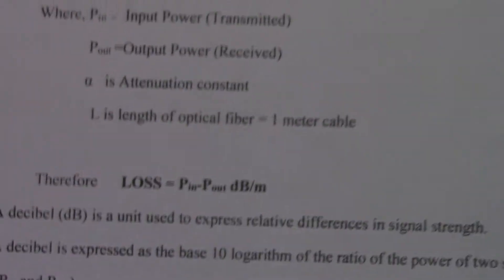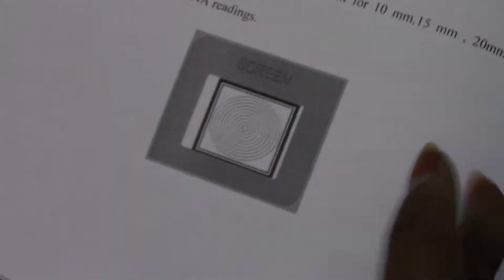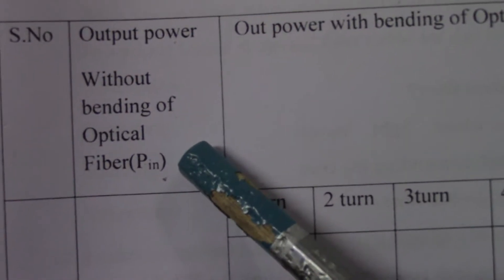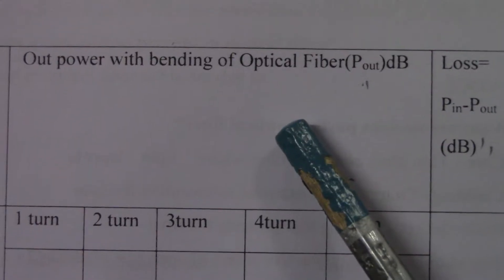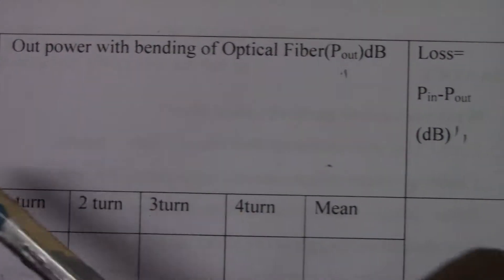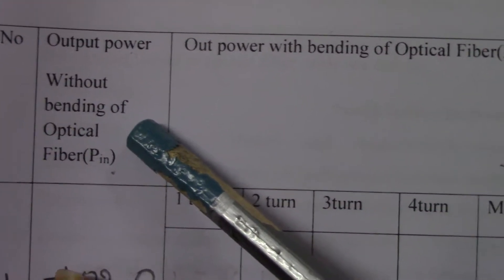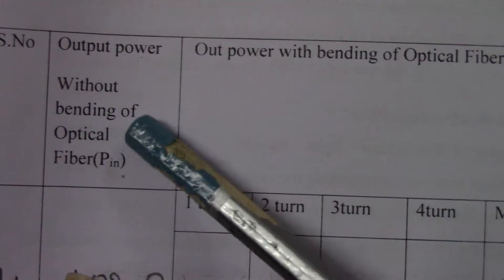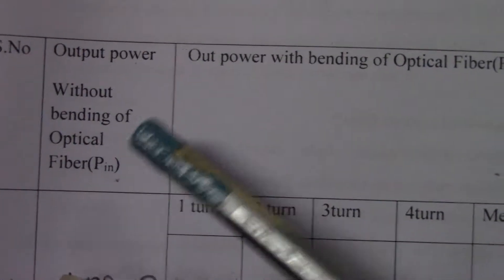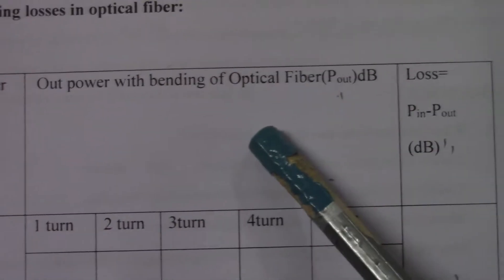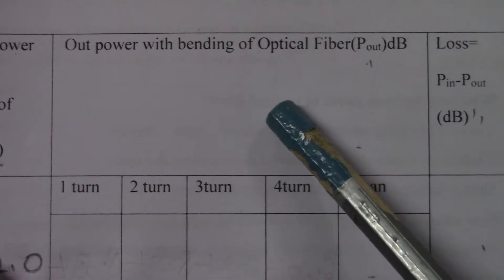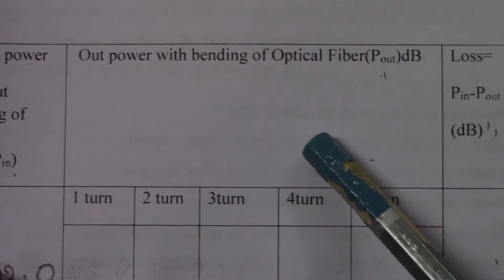Now, coming to the tabular column. The first column indicates input power and the second column indicates output power. Input power is nothing but the output power of the optical fiber before bending. Output power is nothing but the output power of the optical fiber with bending.